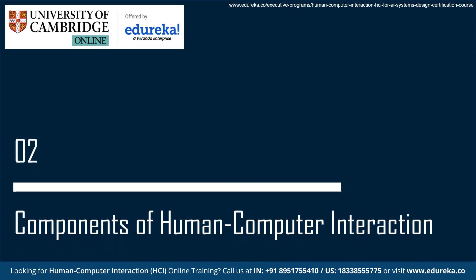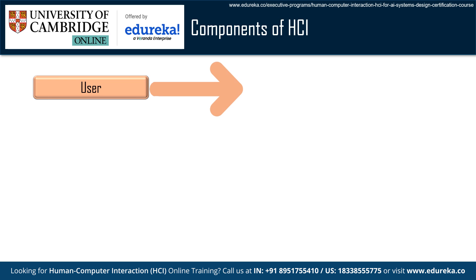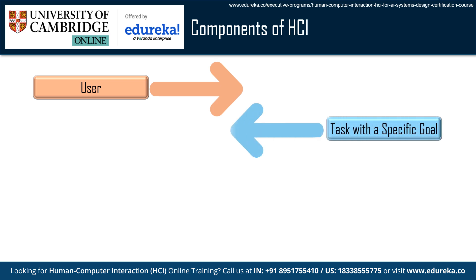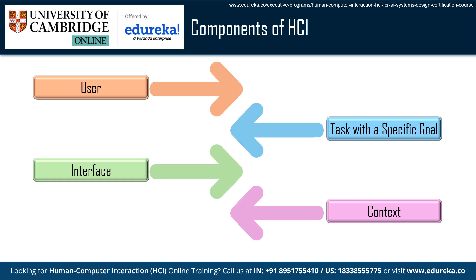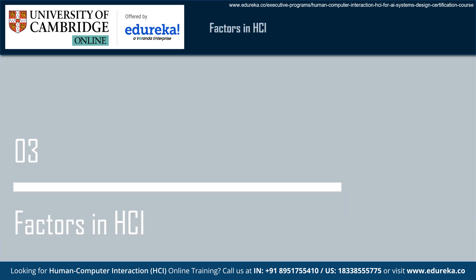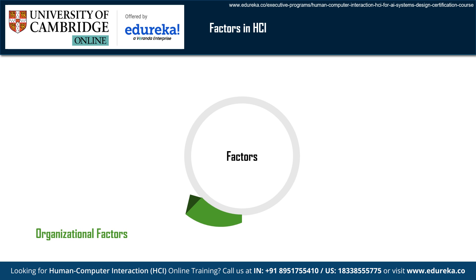Human-computer interaction is made up of four key components: User — individuals or groups participating in a shared task, each bringing their own needs, preferences, and behaviors; Tasks — specific goals driving user actions and interactions with the computer system; Interface — the tools and platforms that facilitate user-computer interaction, including design elements and input/output methods; and Context — the physical surroundings, technological environment, and social aspects that influence user behavior and system design.